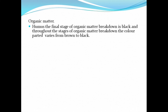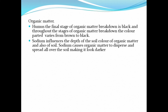Next, let's look at how organic matter influences soil color. The final stage of organic matter breakdown is black, and throughout the stages of breakdown, the color imparted varies from brown to black. Sodium influences the depth of soil color by causing organic matter to disperse and spread throughout the soil, making it look darker. Organic matter imparts a dark color to the soil, which is important for the absorption of heat from the sun and warming up the soil.